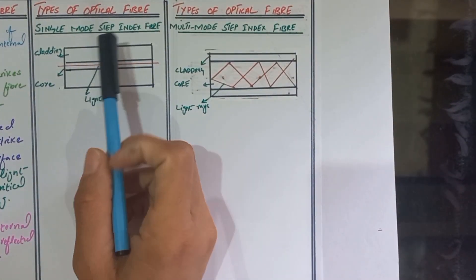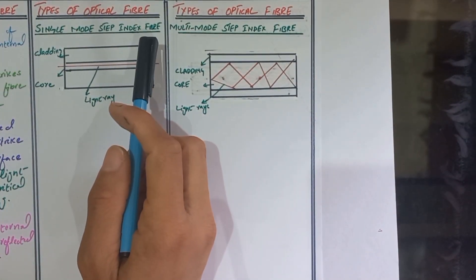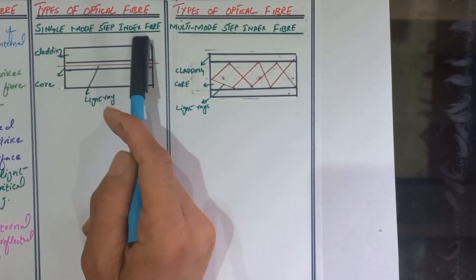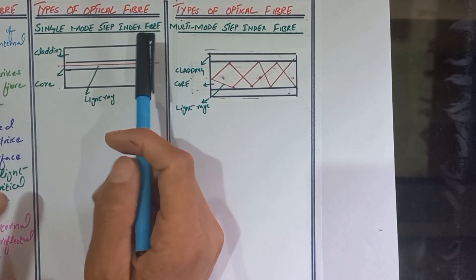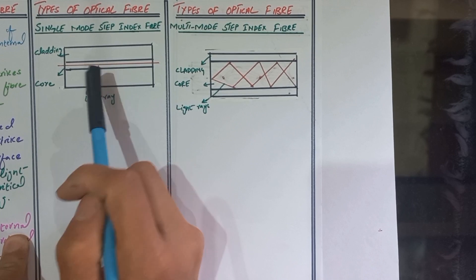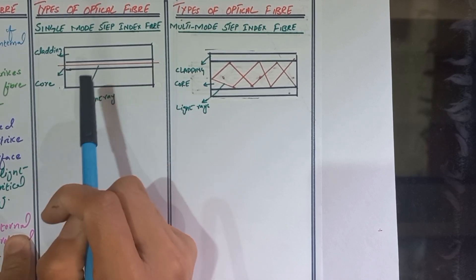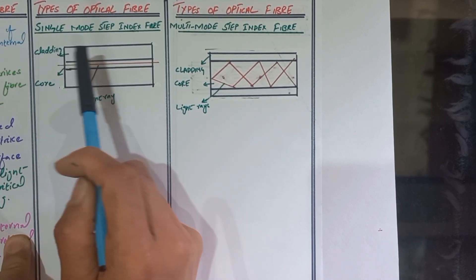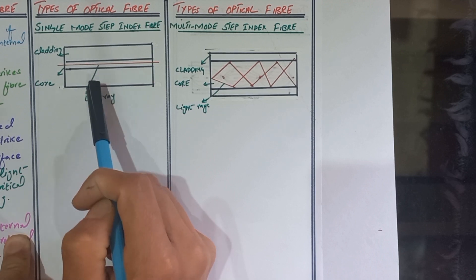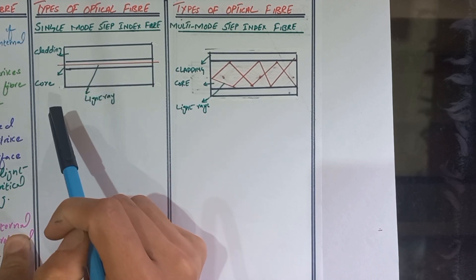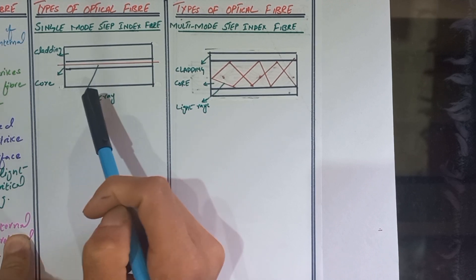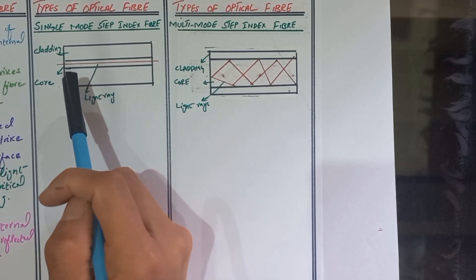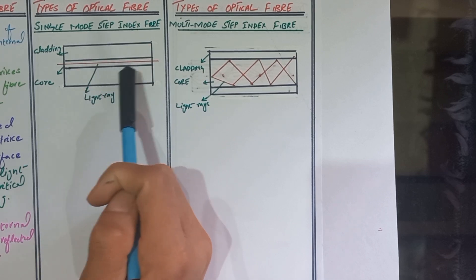Today we discuss the types of optical fiber. The first type is single mode step index fiber. In single mode fiber, only one mode can propagate through the fiber. It has a small core diameter. The difference between core and cladding refractive index is very small. Fabrication is difficult and costly. The light source used is laser, and it is used for high information carrying.